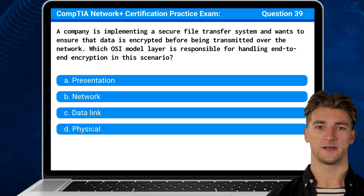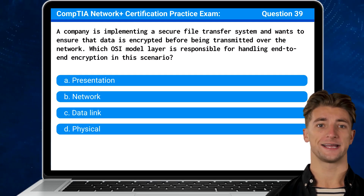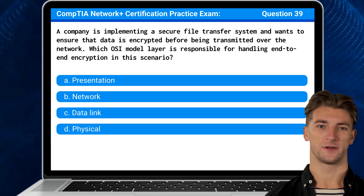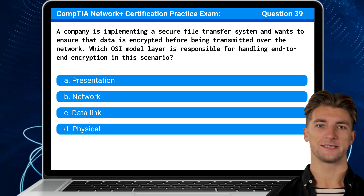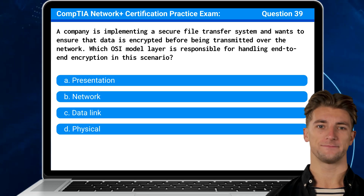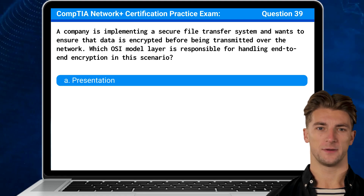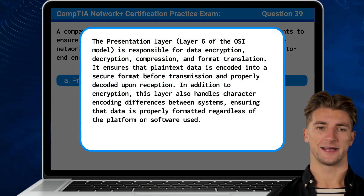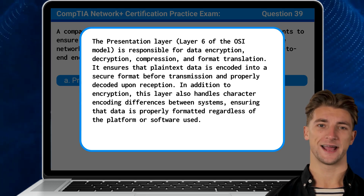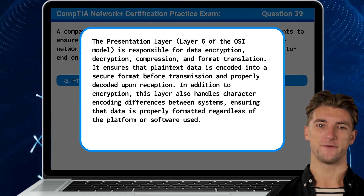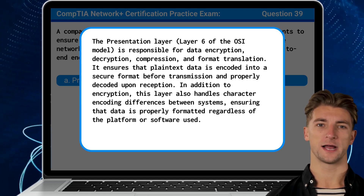Question 39: A company is implementing a secure file transfer system and wants to ensure that data is encrypted before being transmitted over the network. Which OSI model layer is responsible for handling end-to-end encryption in this scenario? The answer is A: Presentation. The presentation layer is responsible for data encryption, decryption, compression, and format translation. It ensures that plain text data is encoded into a secure format before transmission and properly decoded upon reception.